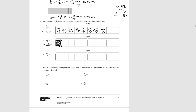For Part C, we have one tenth and nine hundredths. So in decimal form it would be nineteen hundredths.